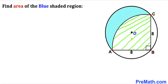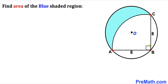Welcome to pre-math. In this video we have a quarter circle fully confined in a big circle whose center is O. The side lengths of this quarter circle are 8 and 8 units, this angle is 90 degrees, and our task is to calculate the area of the blue shaded region inside this big circle.